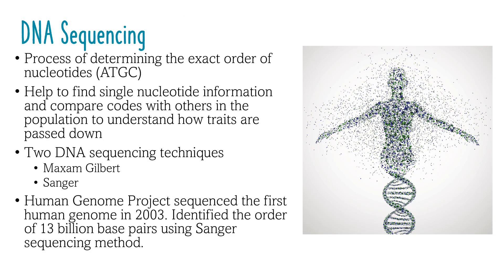DNA sequencing is a process of determining the exact order of nucleotides in a DNA molecule. DNA sequencing helps us find single nucleotide information for entire human genomes. Everyone has a unique genetic code, unless they're an identical twin. Modern computer techniques can compare these codes to understand how traits are passed down through generations.